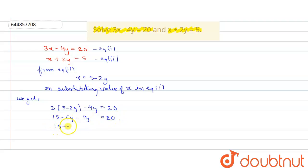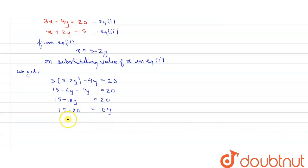15 minus 10y equals to 20. We can write 15 minus 20 equals to 10y. This is minus 5 equals to 10y. We will get y equals to minus 5 upon 10.